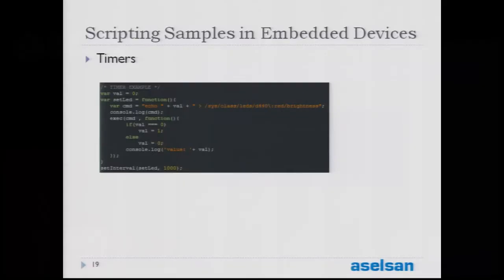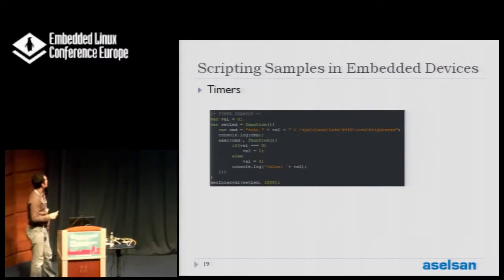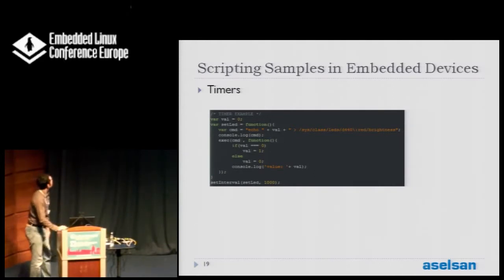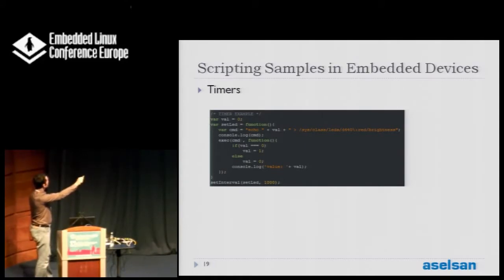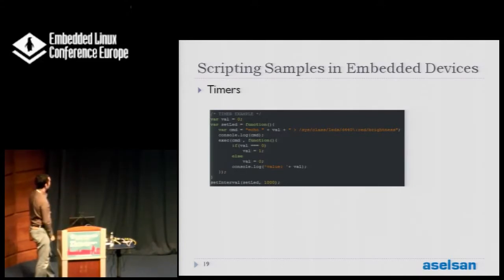My third example is timers. I think they're very powerful and easy to implement in JavaScript and Node. Here we do an LED blinking application, which makes an LED one second on and one second off. We use the setInterval timer function with a timeout value of one second — each second it calls a function. As you remember, this code is similar to the first example; we just change the value every time from 0 to 1 and vice versa, giving us a blinking LED output.